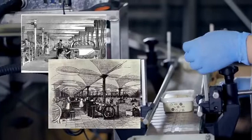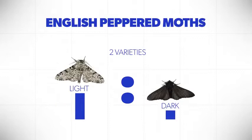Before the Industrial Revolution, there were two varieties of English peppered moths: one dark colored, one light colored. But the light colored was much higher in ratio than the dark colored.